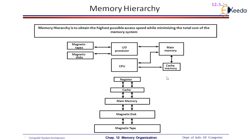When I ask why we require cache memory, you may give several answers — that cache memory stores repeated data, or anything you may have heard about it. But let me put it very clearly so you understand the purpose of the implementation of cache memory.